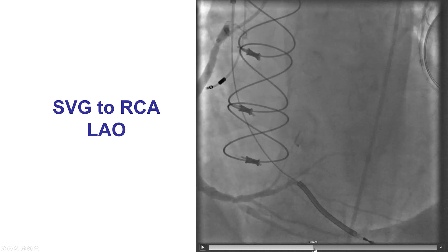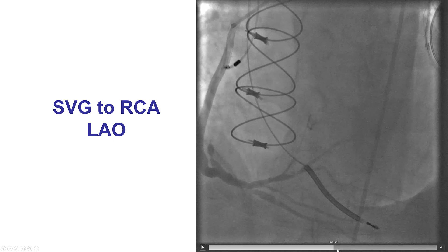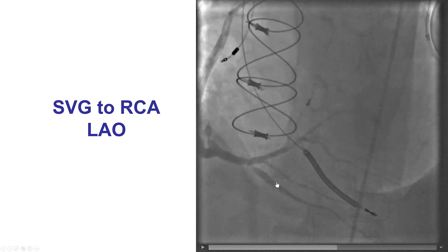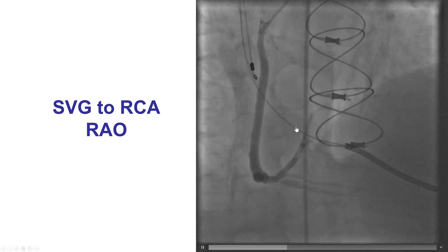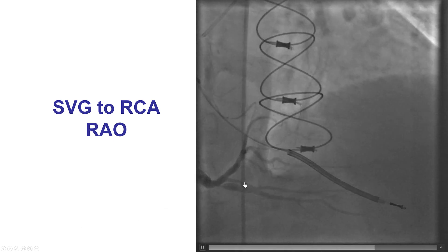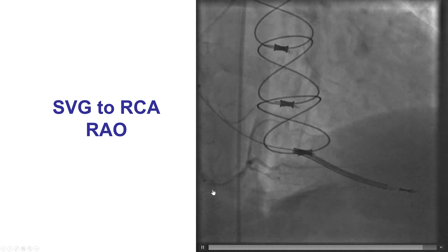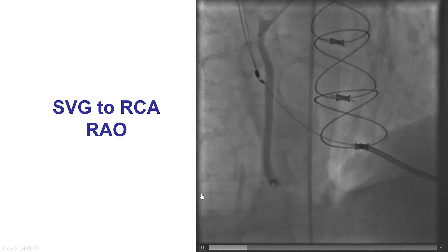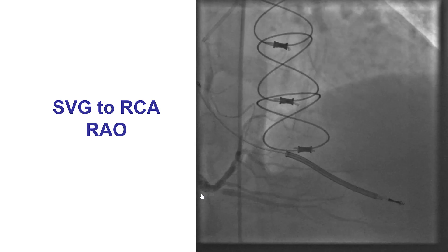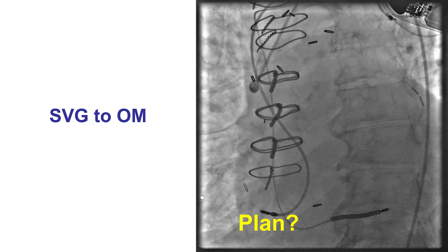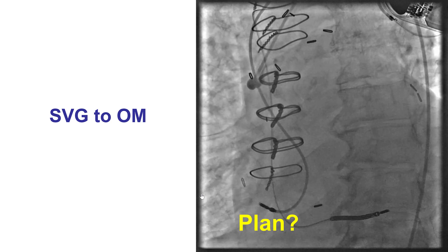However, there was a high-grade lesion at the origin of the right posterior descending artery. The right posterolateral was in good shape. This different view also shows the high-grade lesion in the origin of the right posterior descending artery. There was also another occluded graft to the left.